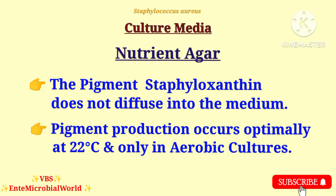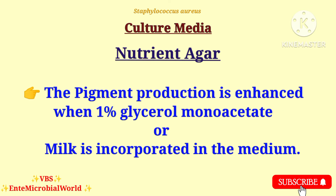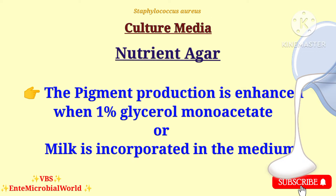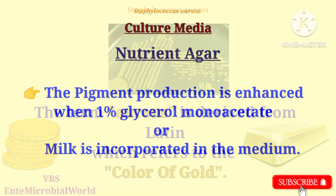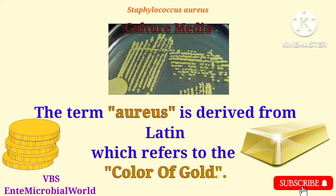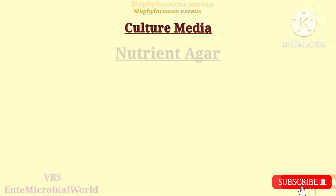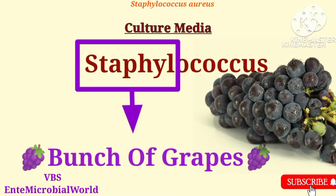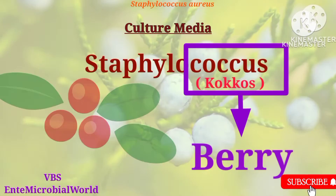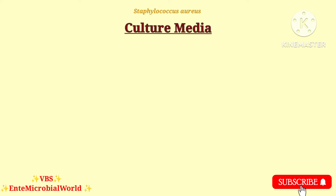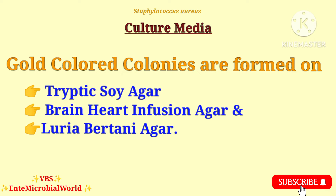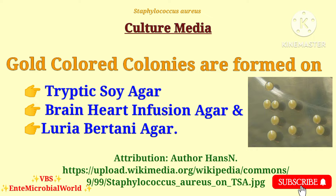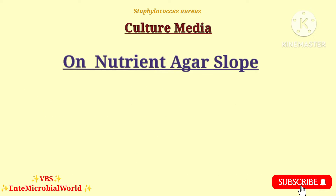Pigment production occurs optimally at 22 degrees Celsius and only in aerobic cultures. Pigment production is enhanced when 1% glycerol monoacetate or milk is incorporated in the medium. The term 'aureus' is derived from Latin referring to the color of gold. The name Staphylococcus is derived from Greek: 'staphyle' meaning a bunch of grapes, and 'coccus' meaning a berry. Characteristic gold-colored colonies are also formed on tryptic soy agar, brain heart infusion agar and Luria-Bertani agar.